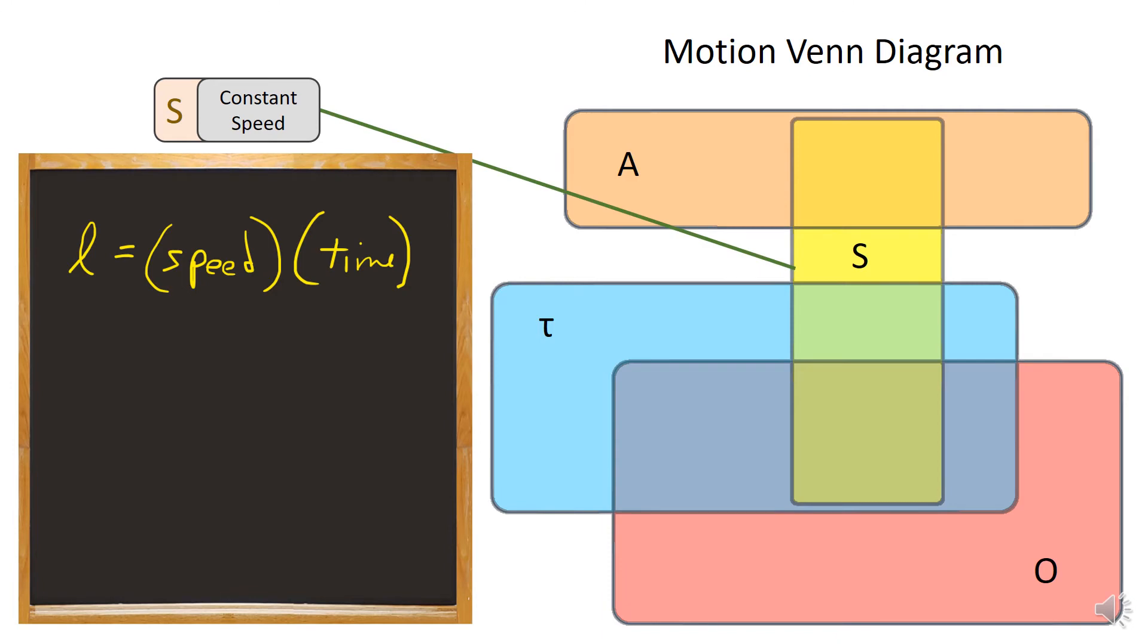Now, motion with a constant speed is probably the simplest. The distance traveled is the speed times the time.